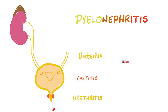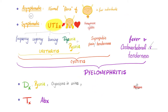If I have bacteria in the urine with no symptoms, it's called asymptomatic bacteriuria. Infection in the urethra is called urethritis; in the urinary bladder is cystitis; in the ureters is ureteritis; and in the kidney pelvis is pyelonephritis. Pyelo means pelvis, nephro means kidney, and itis means inflammation.